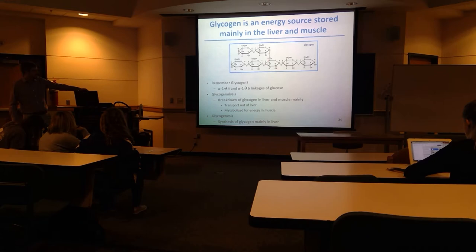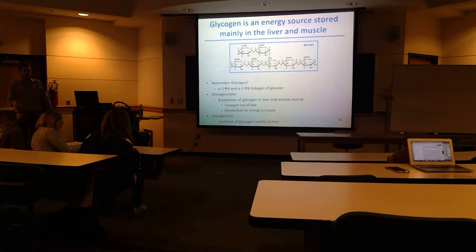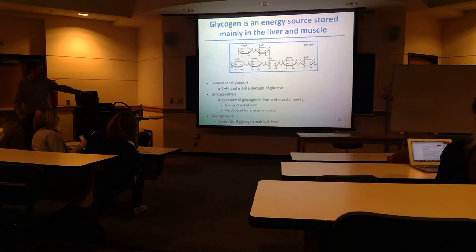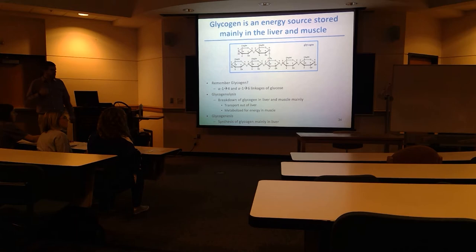There are two processes: glycogenolysis — meaning you're breaking down glycogen, and the end product is eventually glucose so you can use that. Things like transport out of the liver: when you break down glycogen, you get glucose-6-phosphate and then glucose, which is exported out of the liver to increase blood glucose levels. Muscles would break down glycogen and use that glucose for glycolysis for energy.